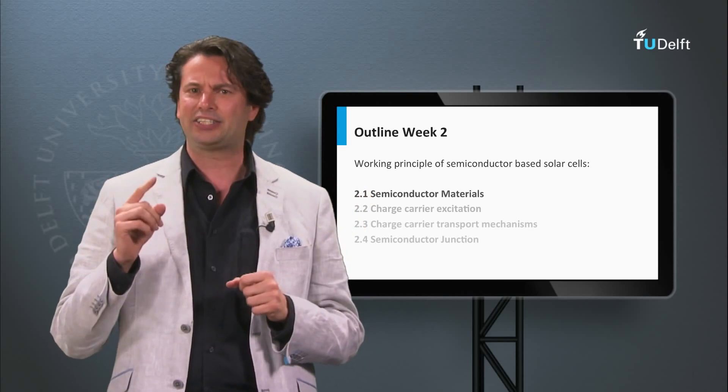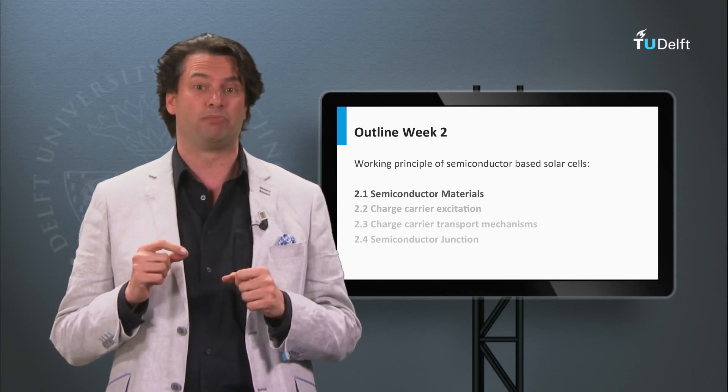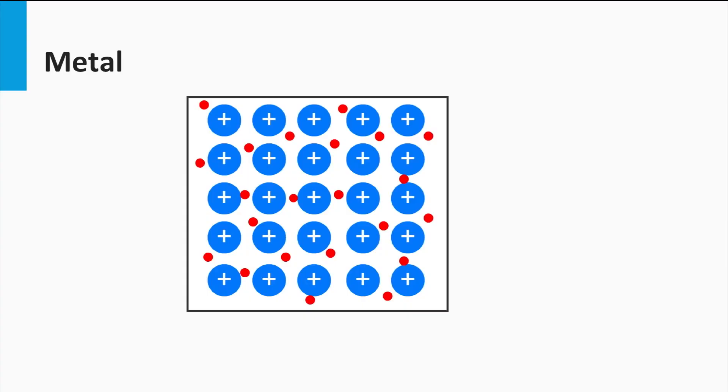Let's start with answering the question: what is a semiconductor material? Materials can be categorized in terms of their electrical properties. Let's consider metals.